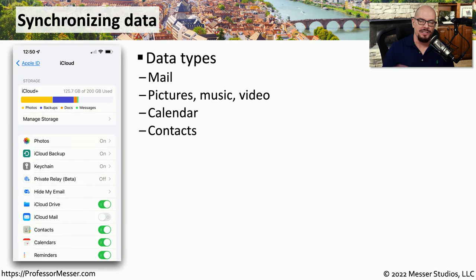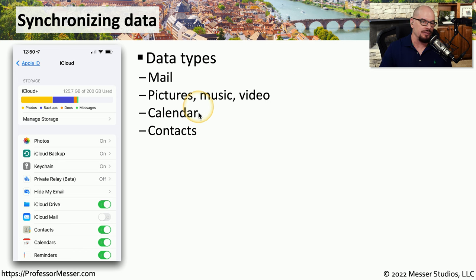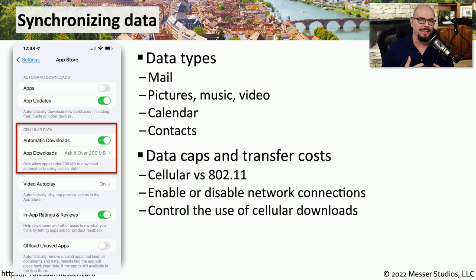As you can see, there are extensive configuration settings for iCloud, but you can still control exactly what data is synchronized. For example, you may want mail to be synchronized between your mobile device and other devices. You may want to have pictures, music, and videos stored in iCloud, or synchronize calendar settings or contact details. As you can imagine, this could be sending and receiving a large amount of data. So you also have control over how that data is sent and over what networks.